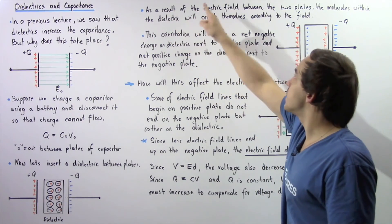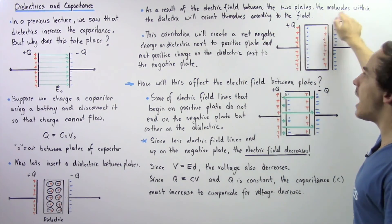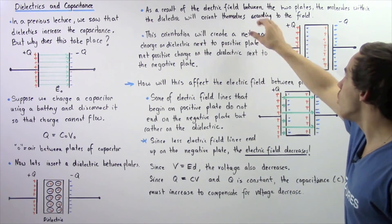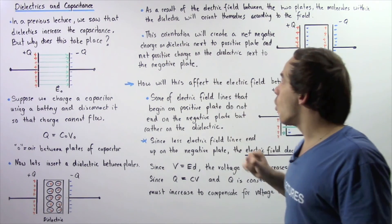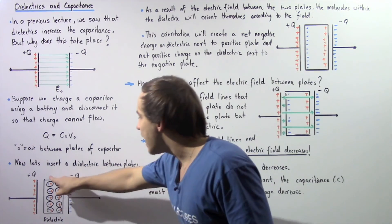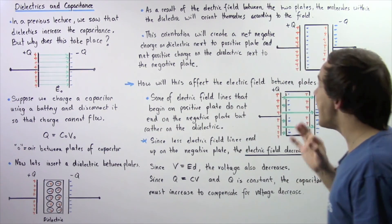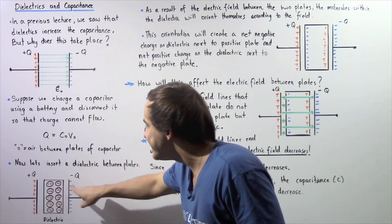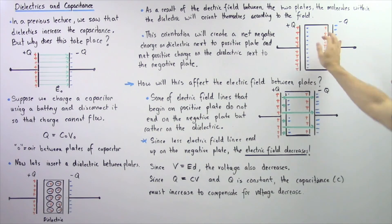As a result of the electric field that exists between our two plates, the molecules within our dielectric material will orient themselves accordingly with our electric field. Now, this orientation will create a net negative charge on the dielectric next to this positive plate and will create a net positive charge on the dielectric next to our negative plate.